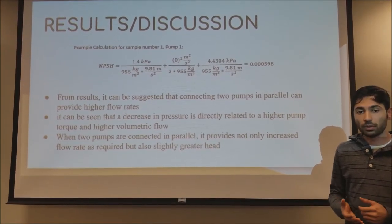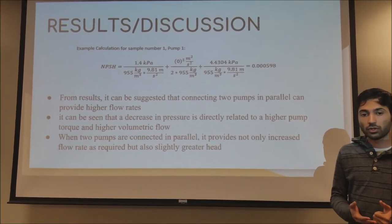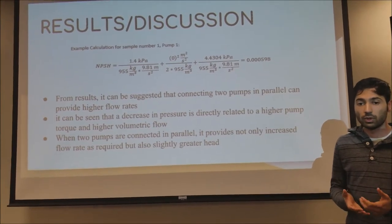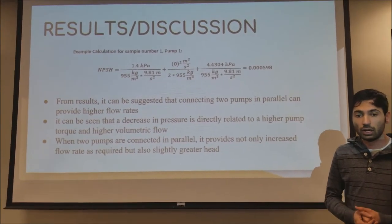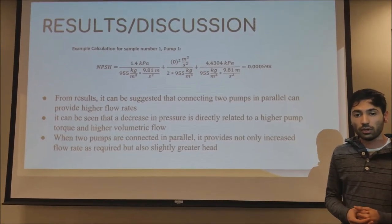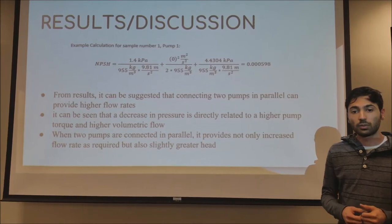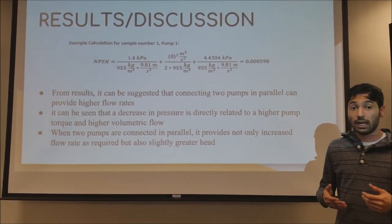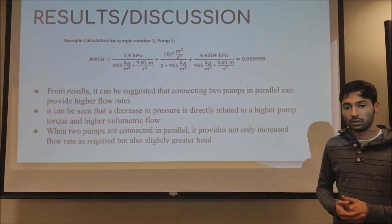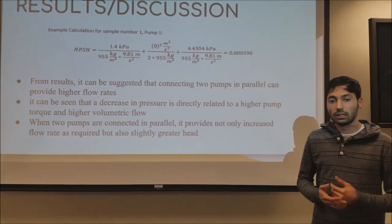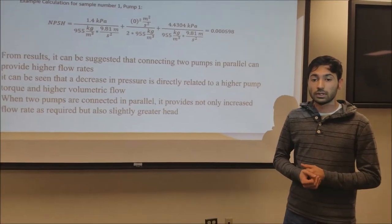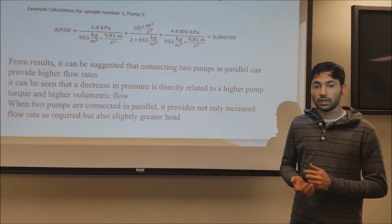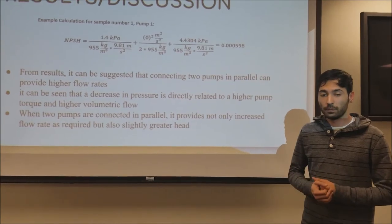At higher pump RPMs, the outlet pressure is higher, whereas the inlet head pressure remains relatively consistent. This relationship is why the output heads are higher for higher pump RPMs and is expected to behave this way. The effective two-pump performance curve is obtained by adding the flow rates of each pump at the same head.